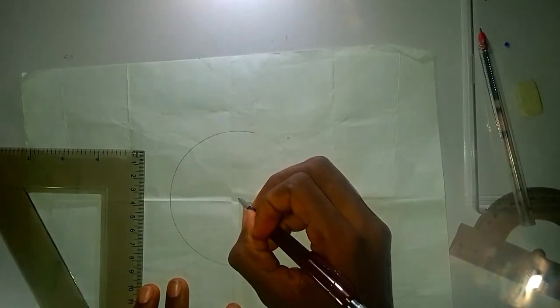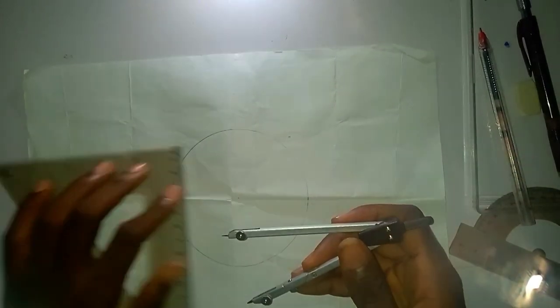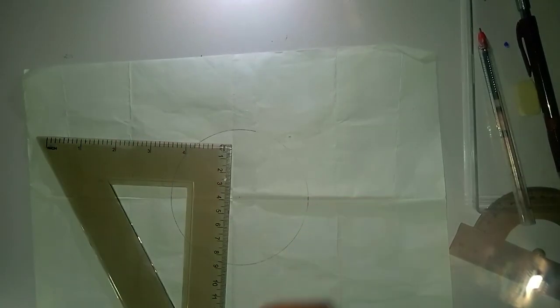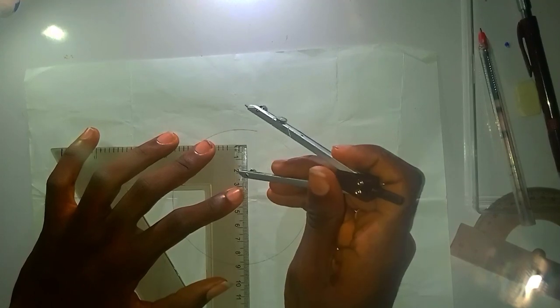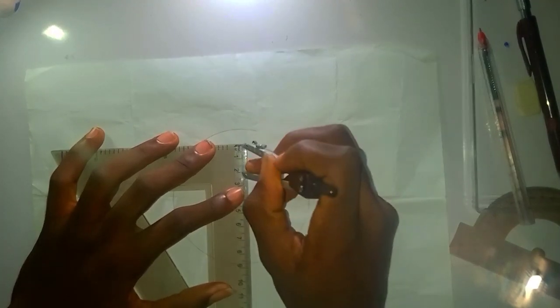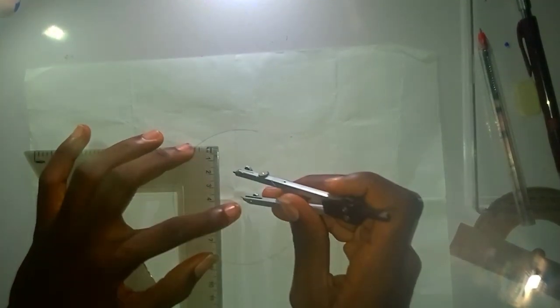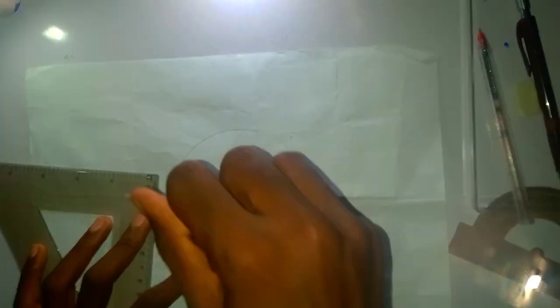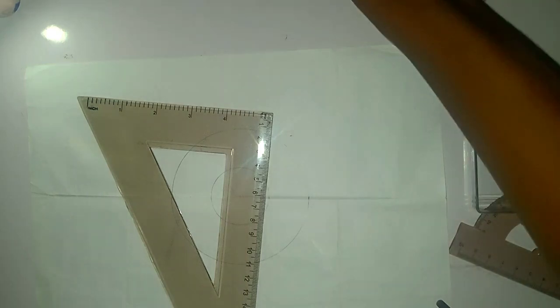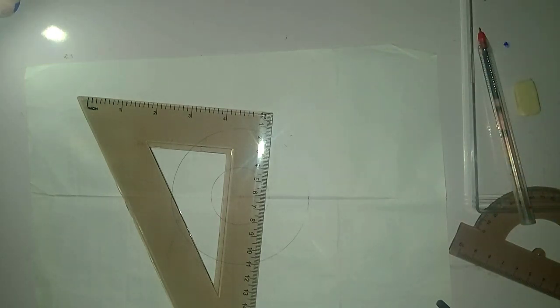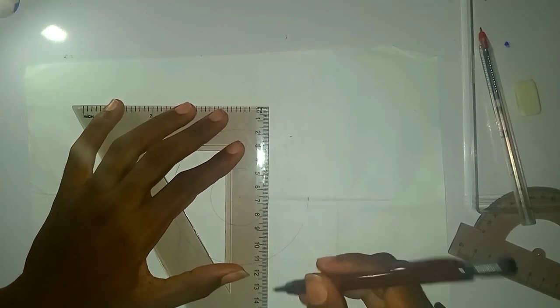From the question, we're also given that the distance from the cam shaft, the offset, is 20. So with 20, I'm adjusting my compass and then placing at the center point, I'll draw a circle. This circle itself is our offset circle.